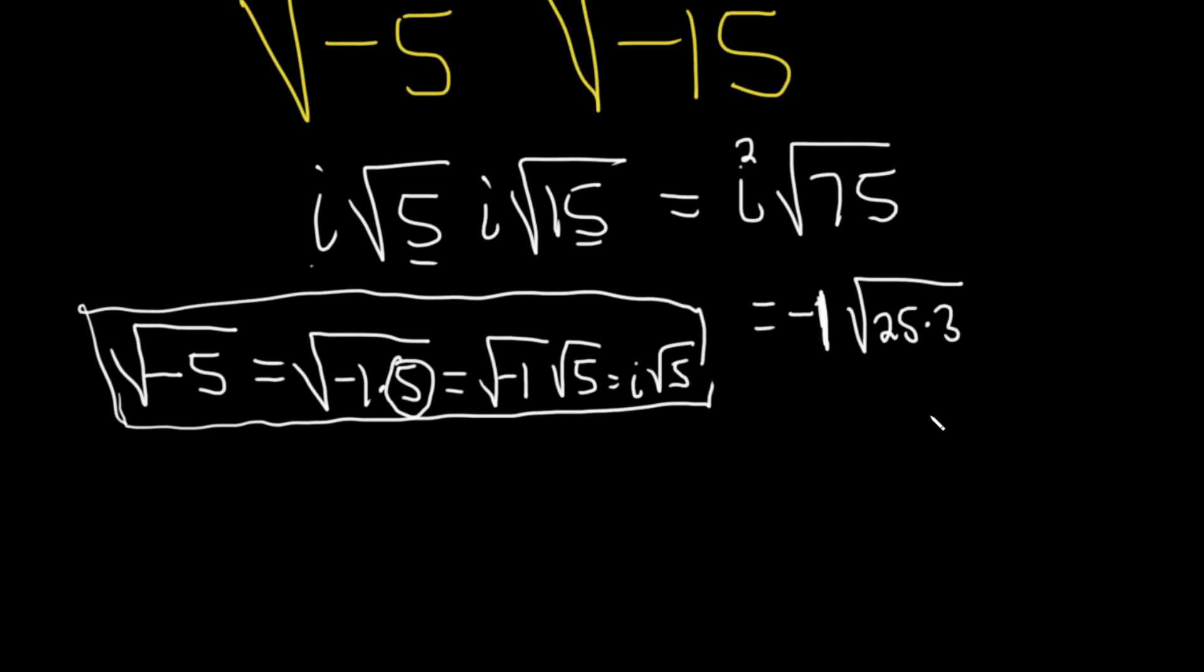Oh, and there's that rule again. Now we know we can write this as negative square root of 25, square root of 3. We can do that. We can break them up because they're both positive. And then the square root of 25 is 5. So this is minus 5 square root of 3.